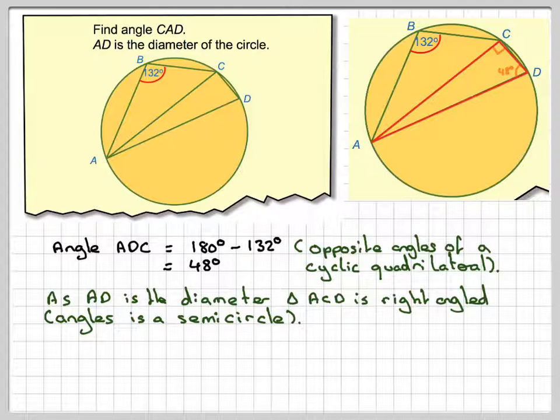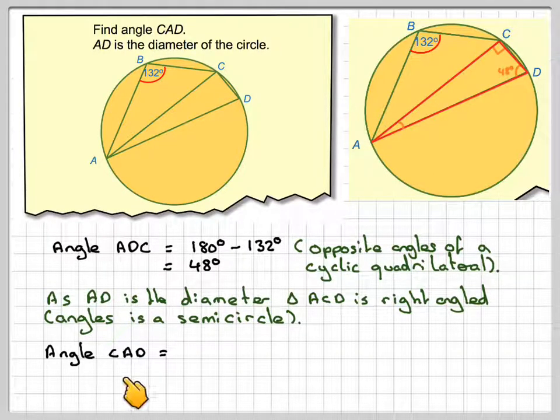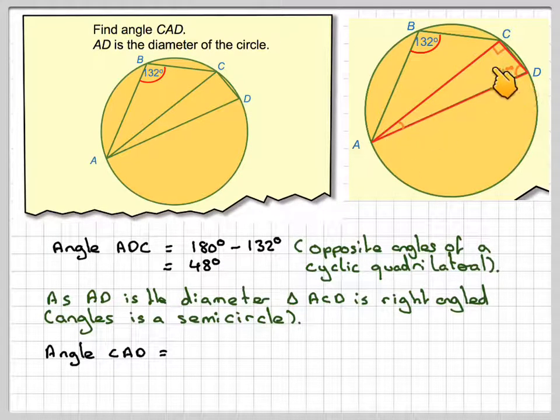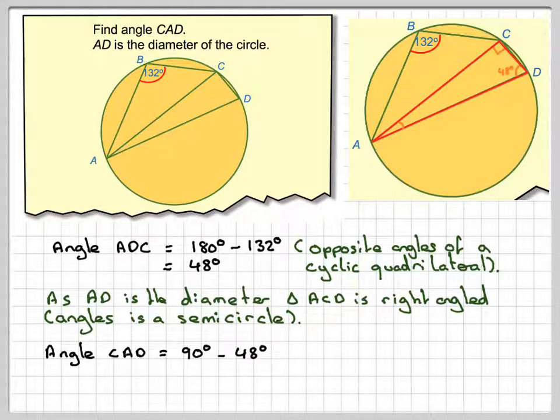So doing that, we can now find the actual angle we're asked to find, which is CAD, which is this one here. OK, well these two must add up to 90 if this is 90 degrees. So we can find this angle by doing 90 minus 48, which equals 42 degrees.